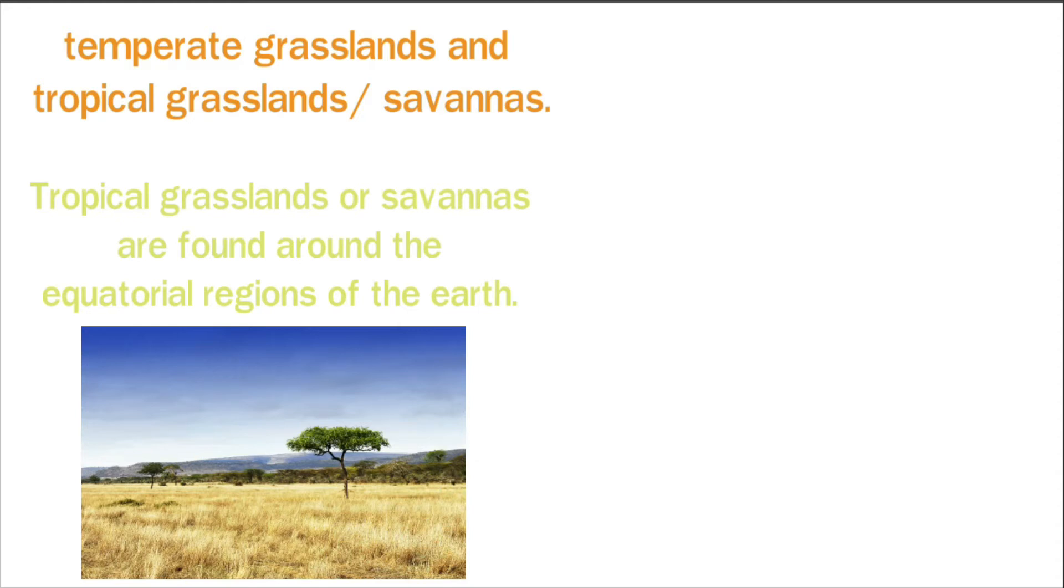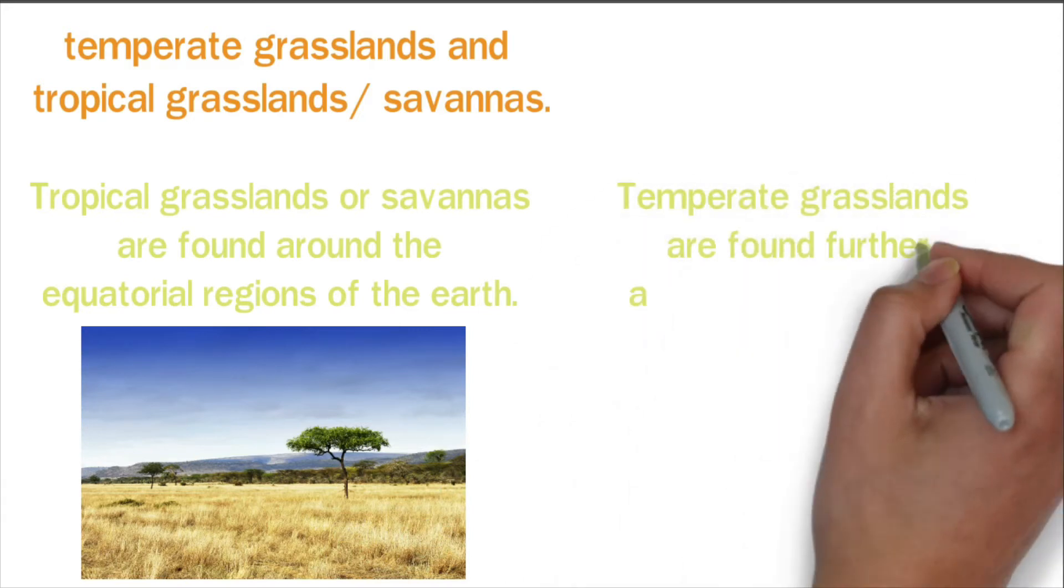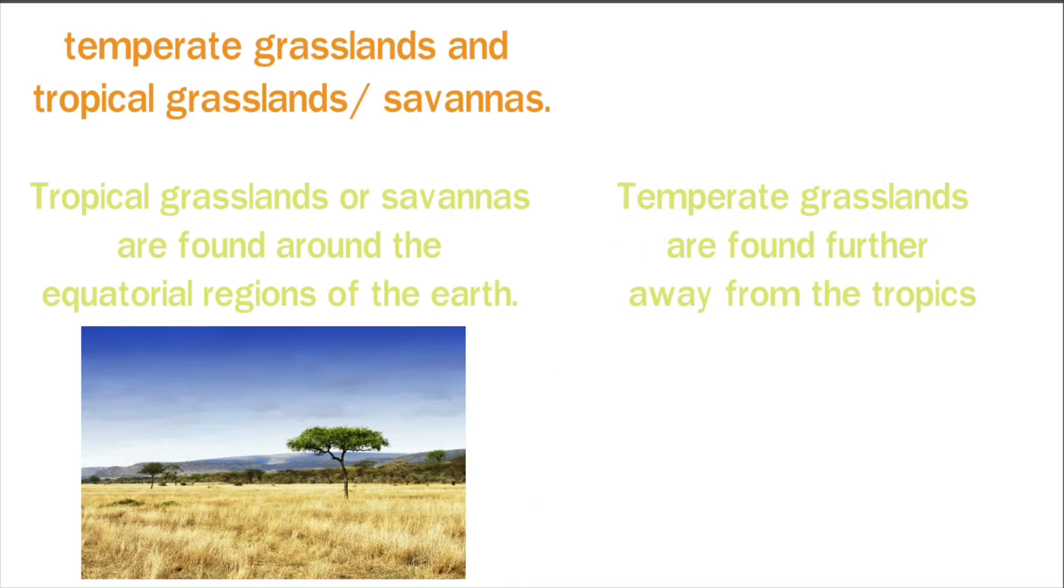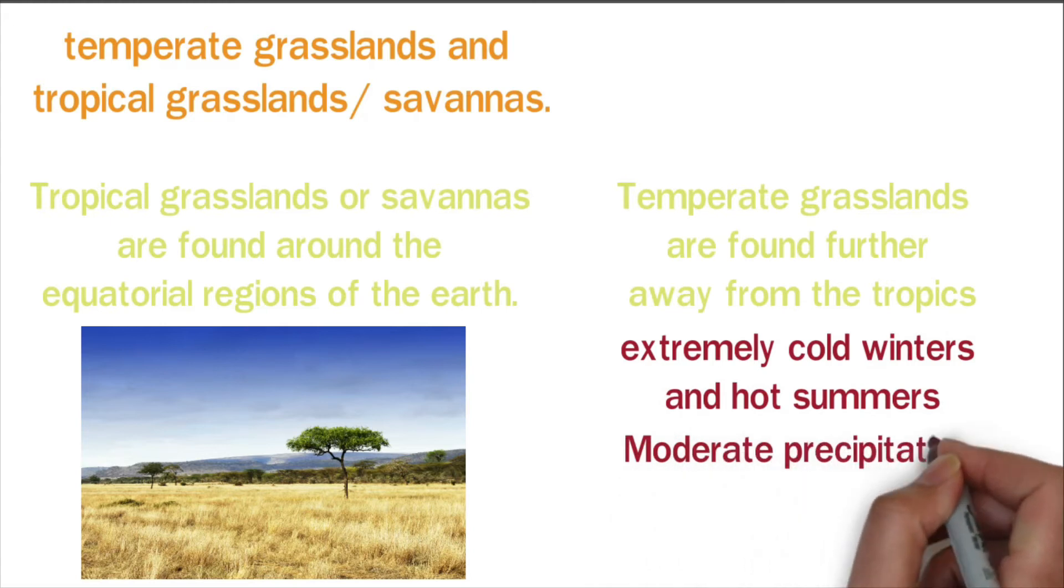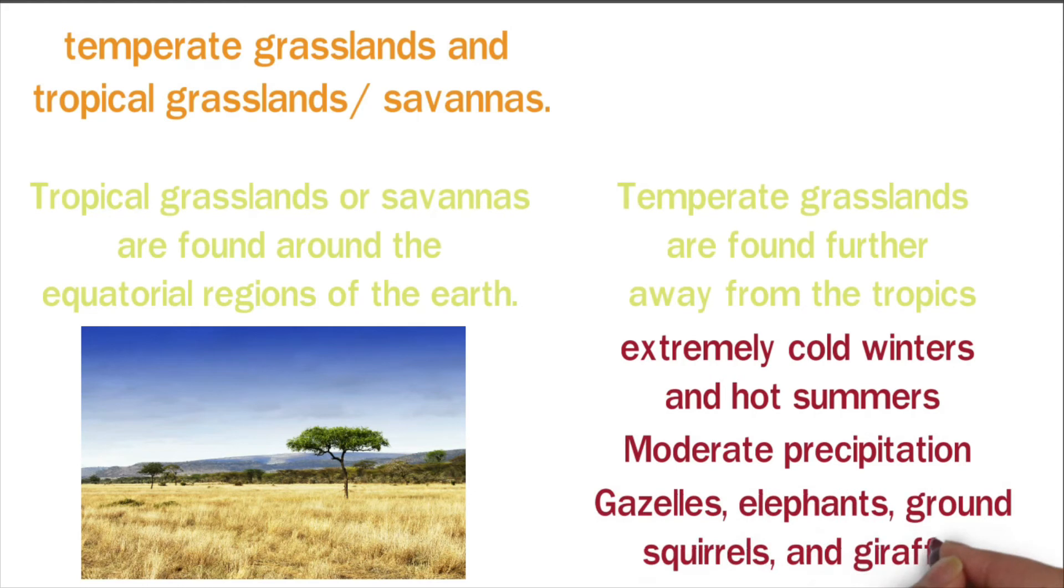Temperate grasslands are found further away from the tropics. They are characterized by extremely cold winters and hot summers. These regions receive moderate precipitation in the form of rain or snow. Gazelles, elephants, ground squirrels, and giraffes are well adapted to grassland biomes.